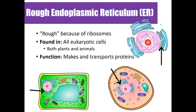The rough endoplasmic reticulum hugs the nucleus. It's called 'rough' because of the ribosomes found on its surface. The rough ER makes and packages proteins for delivery. While it's not found in prokaryotic cells, it is found in both plant and animal cells.